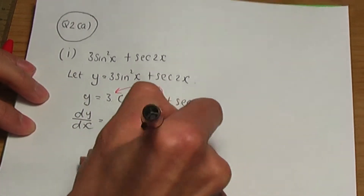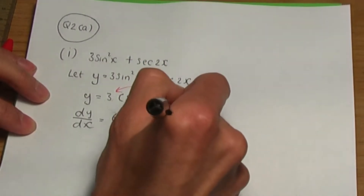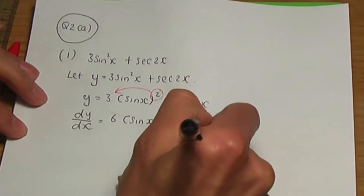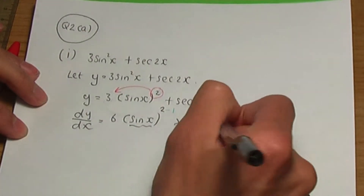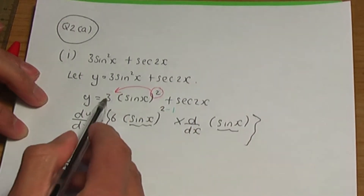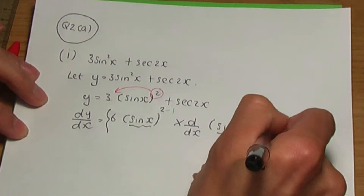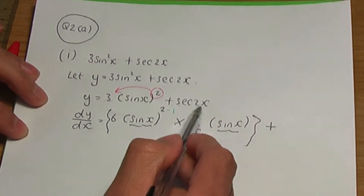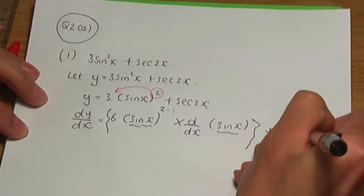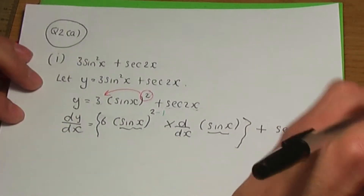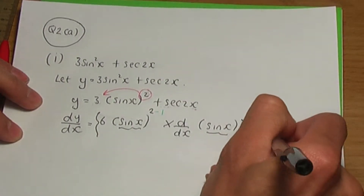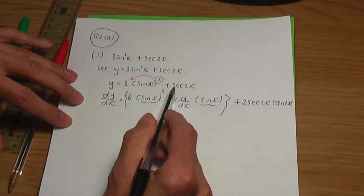So it's 6 into sine x. Then you subtract 1 from the power — that's 2 minus 1 — but then you need to multiply by d/dx of the term within the brackets, which is sine x. Now we need to differentiate sec 2x. The derivative of sec is sec x tan x, so when you differentiate sec 2x you get sec 2x tan 2x, but you need to multiply by the derivative of 2x, which is 2.